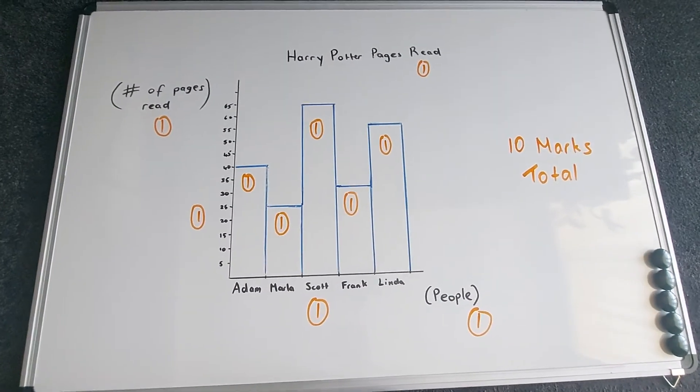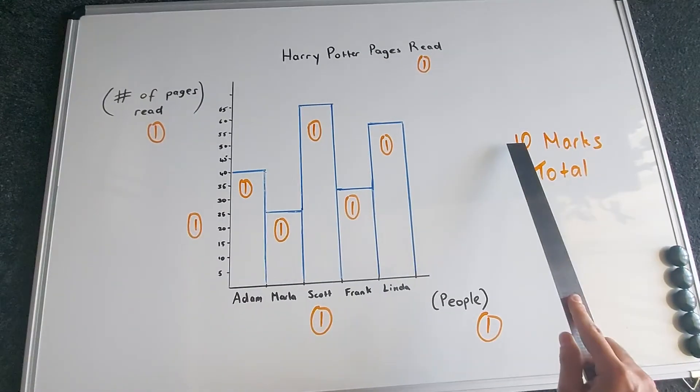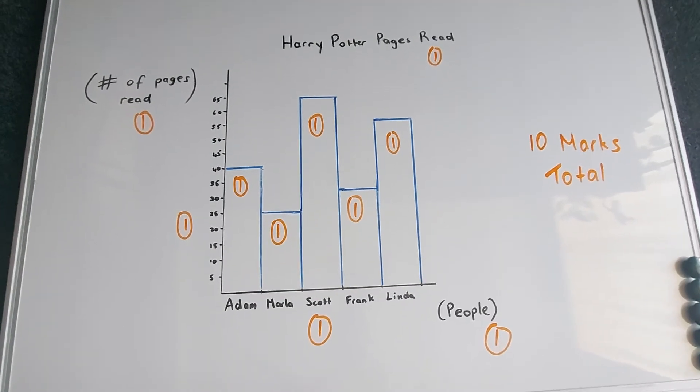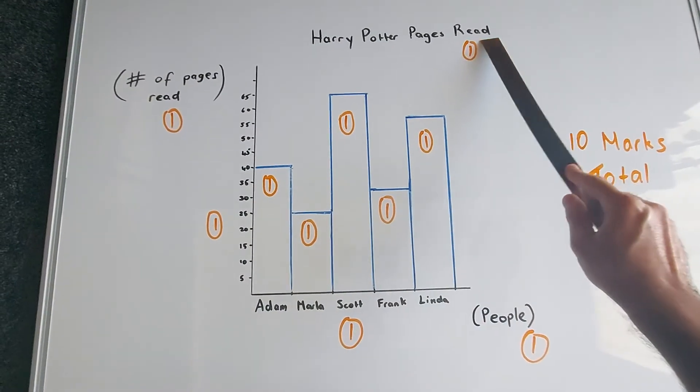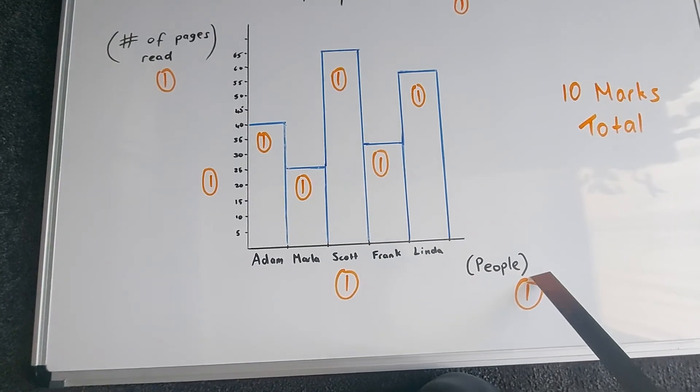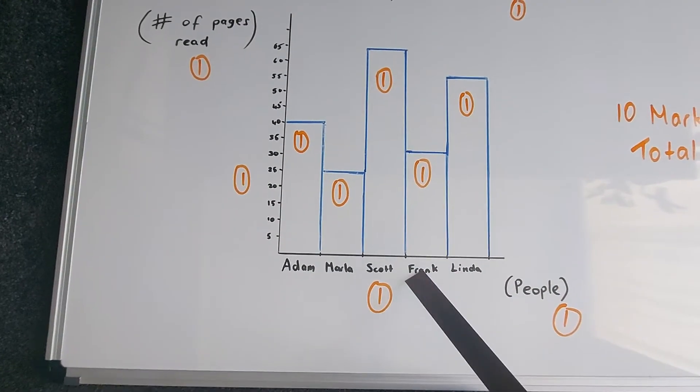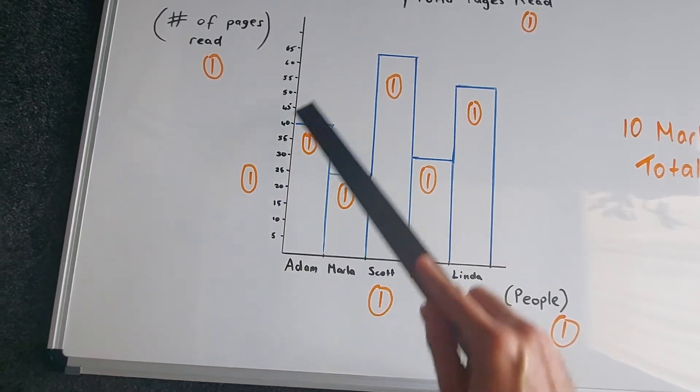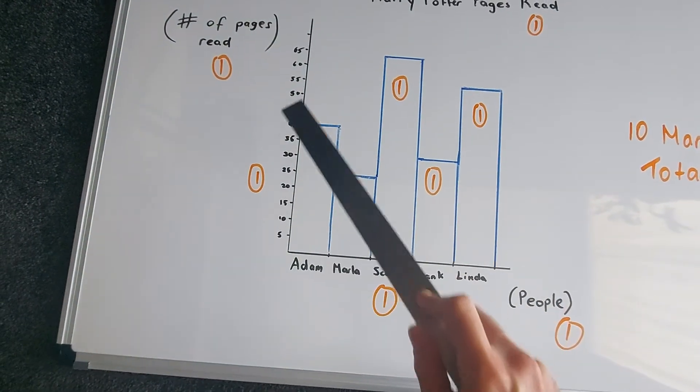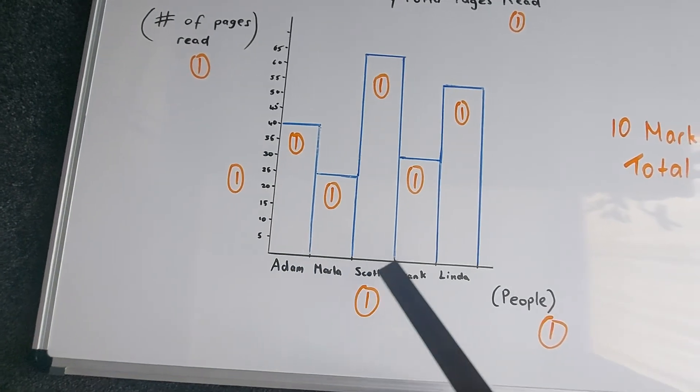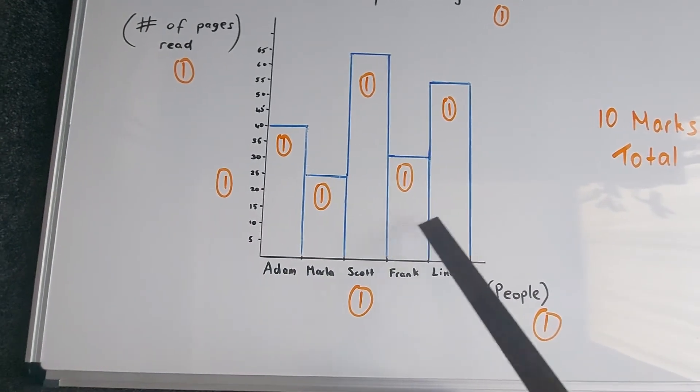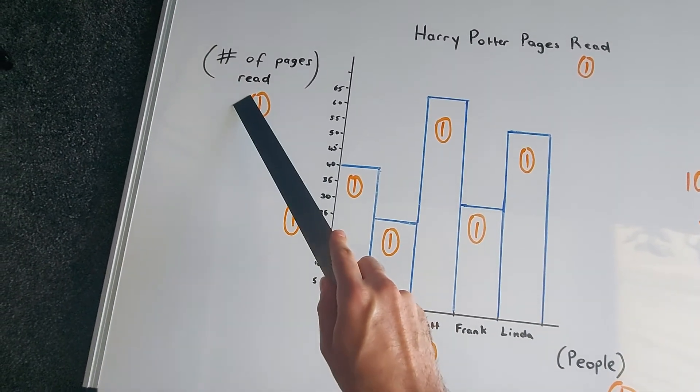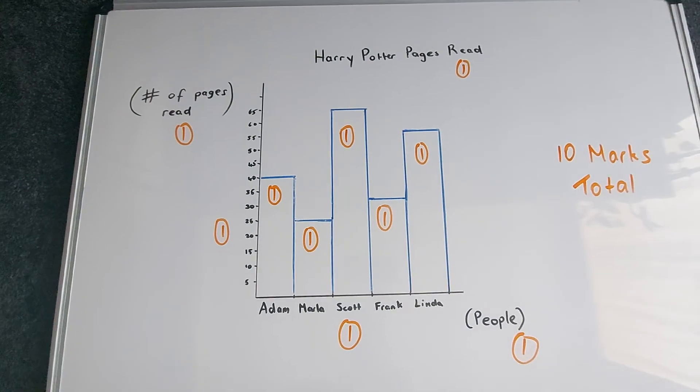Assuming you've done everything correctly, then you can give yourself ten marks. But do be critical of yourself just so that you can learn how to draw a graph. So that's one mark for the heading, one mark for the x-axis label, one mark for the names, one mark for the y-axis, even spacing, even values as you increase, even spacing. The bars are the same width. And one mark for the y-axis label as well. And that should get you to ten.